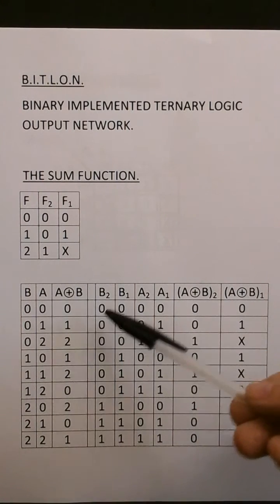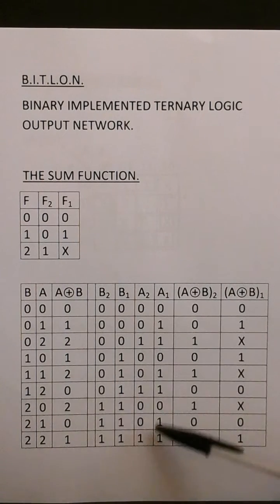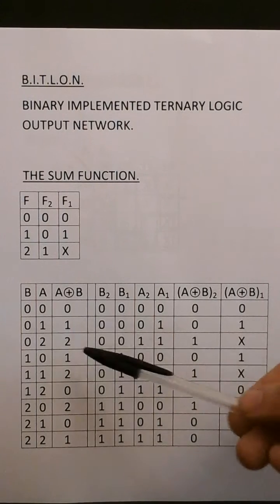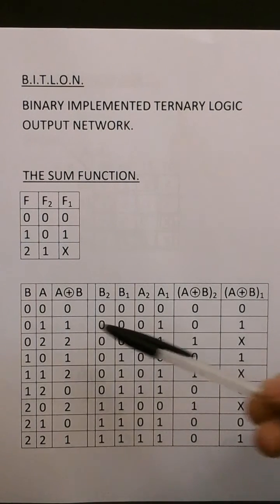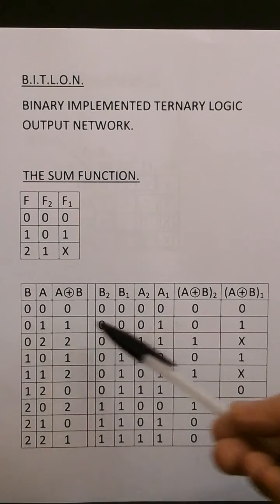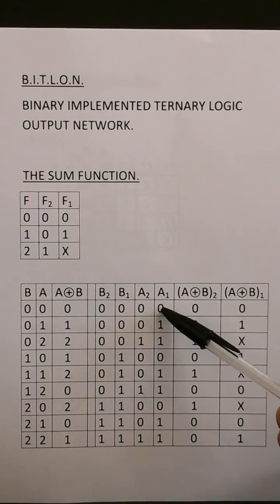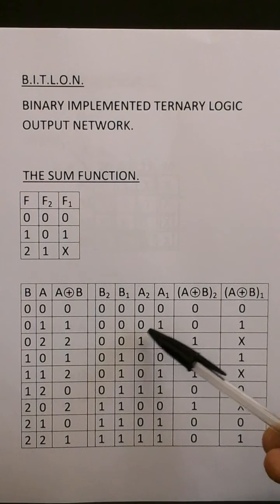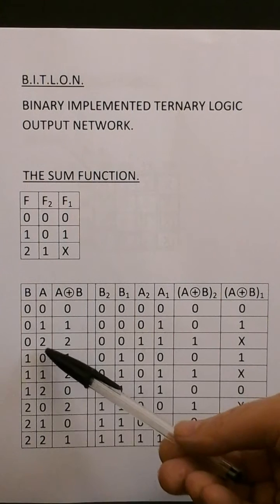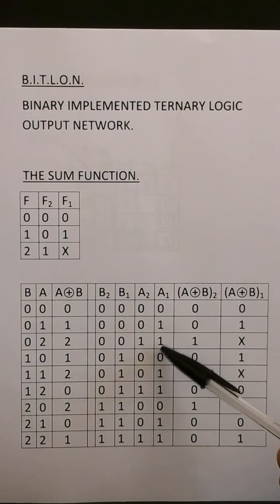For this truth table here we have the binary coding for inputs A and B. This is A1 and A2. They follow the coding: if A is 0, A2 is 0 and A1 is 0. If A is 1, A2 is 0 and A1 is 1. If A is 2, both A2 and A1 are 1s.